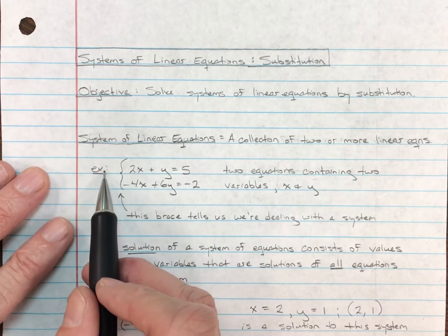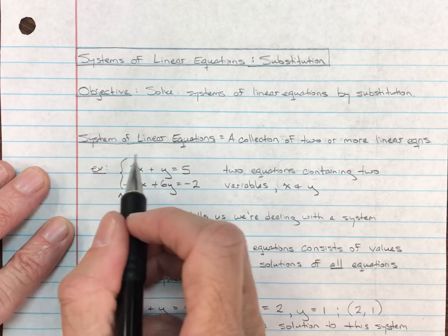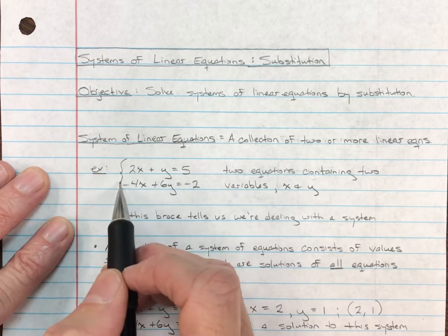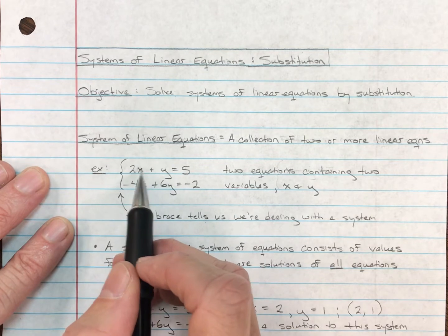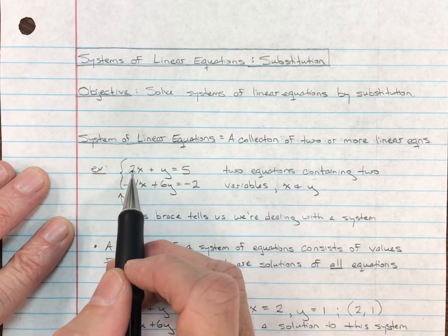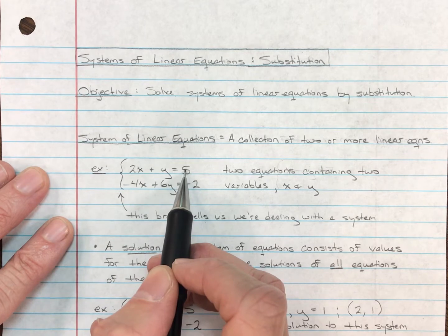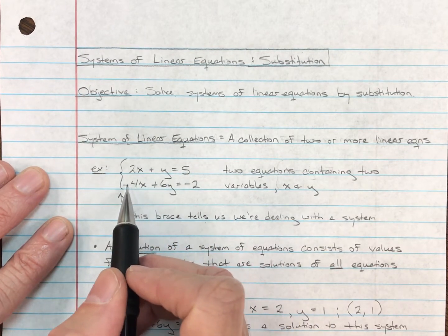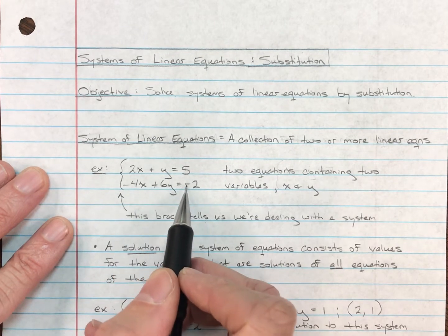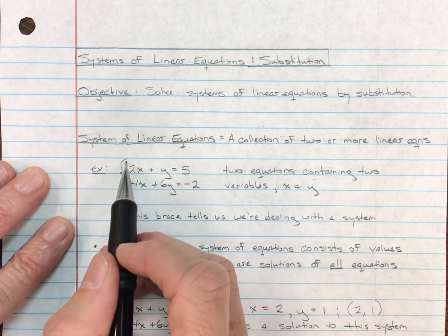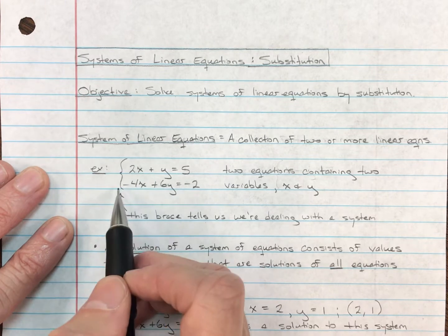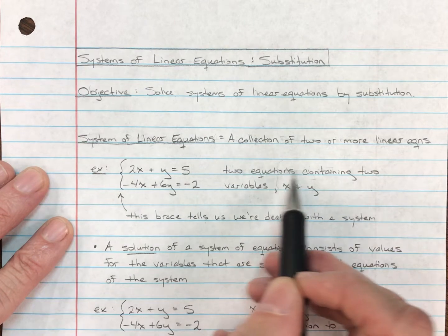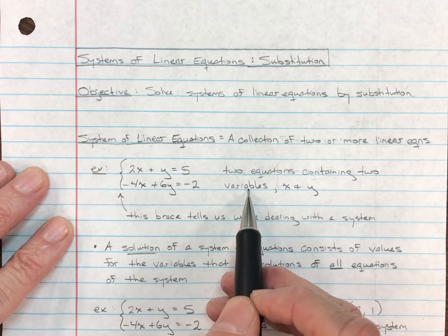Here's an example. This curly bracket, this brace, tells us that we're dealing with a system. In this case, we have two equations. The first equation: 2x plus 2y equals 5, a linear equation. The second linear equation: negative 4x plus 6y equals negative 2. This curly bracket brace tells us we're dealing with a system of two linear equations containing two variables, x and y.